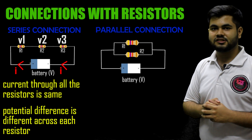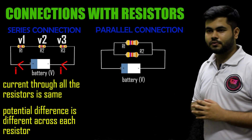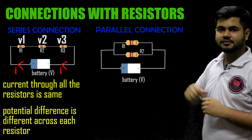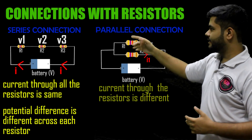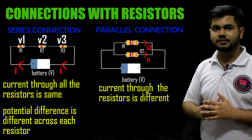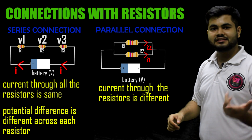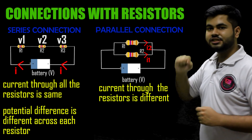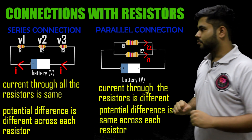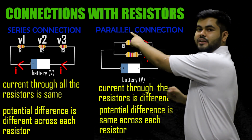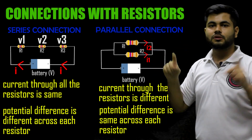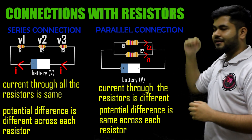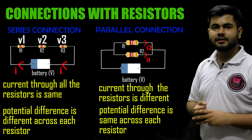In parallel connection, the current comes in and then there is branching, so the current separates — therefore the current is different in both resistors. However, when we talk about potential difference, it remains the same because both branches have the same starting and ending points. So in parallel connection: current is different and potential difference is the same.